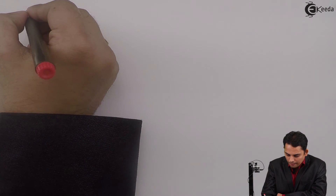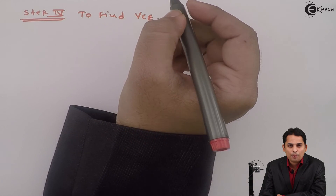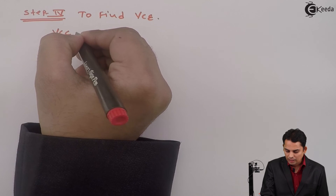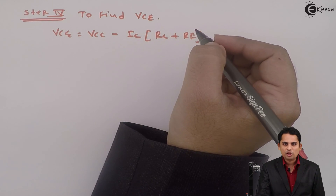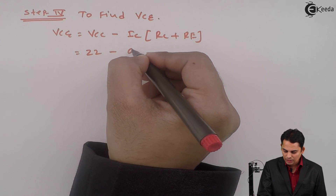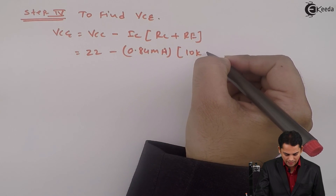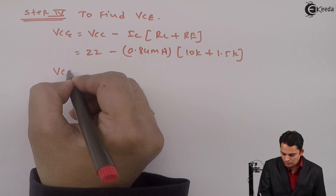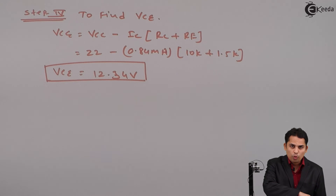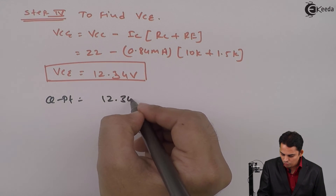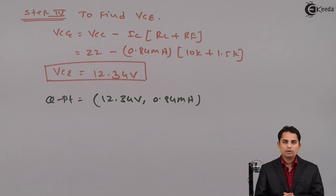Now step 4 will be to find out VCE, for which we apply KVL to the output. The equation becomes: VCE is equal to VCC minus IC times (RC plus RE). Substituting values: 22 volts minus 0.84 milli amperes multiplied by (10 kilo ohms plus 1.5 kilo ohms). Solving this, VCE is equal to 12.34 volts, and hence the Q point is (12.34 V, 0.84 mA). This is how we can calculate the Q point for voltage divider bias.